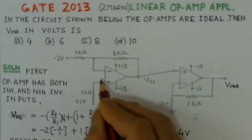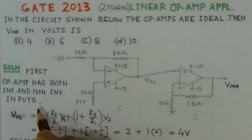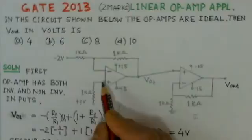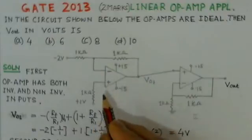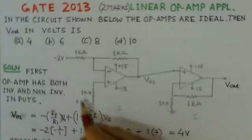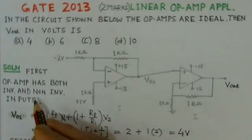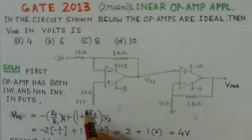We start with the first operational amplifier. Here, this operational amplifier has both inverting and non-inverting inputs. It is working as a differential amplifier and the output for a differential amplifier is as given by this equation.